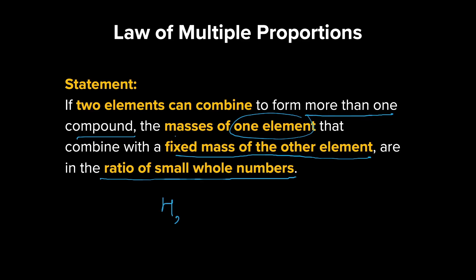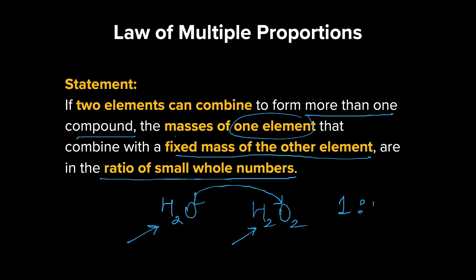So when we had two compounds — water and hydrogen peroxide — both compounds were made up of the same elements. We fix the mass of one of the elements, and if we check the masses of the other element, they bear a simple whole number ratio.